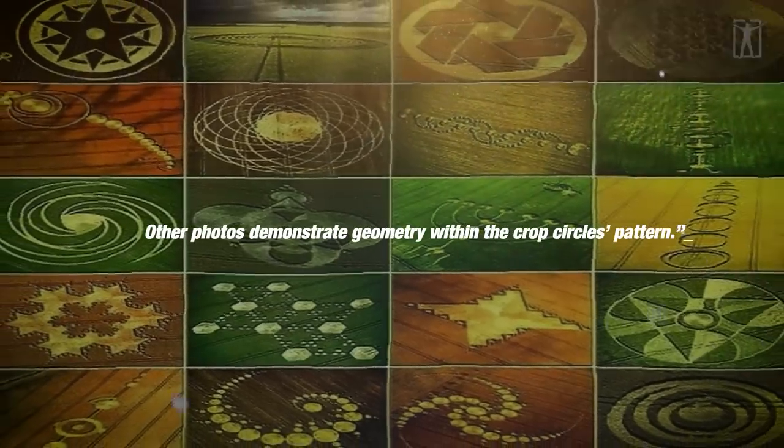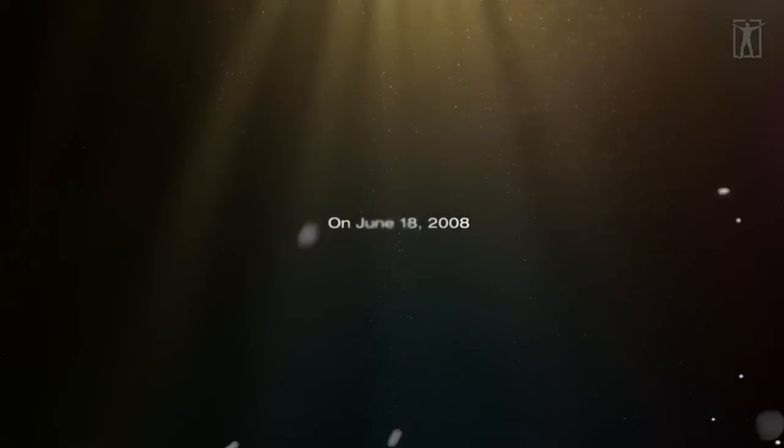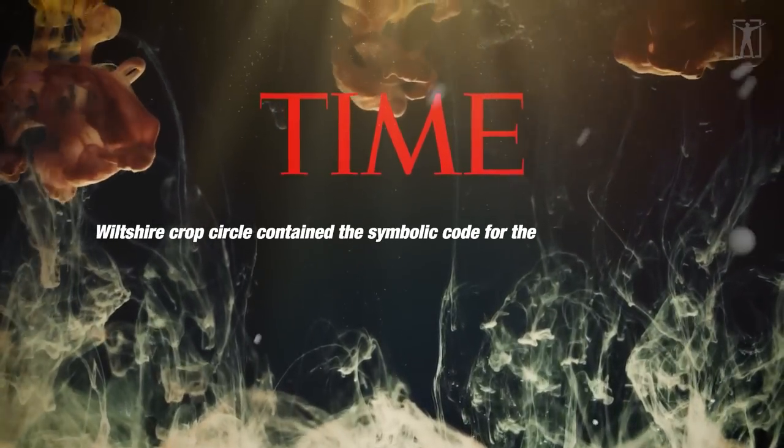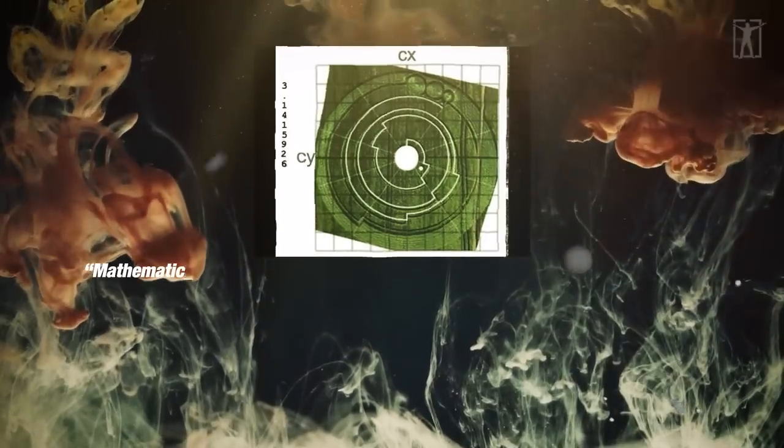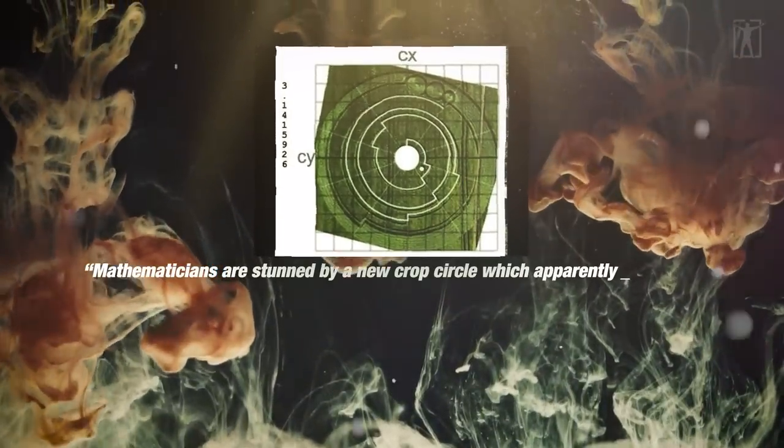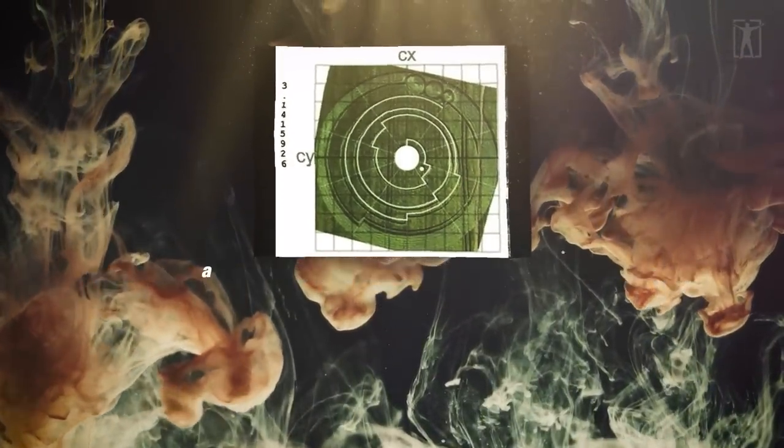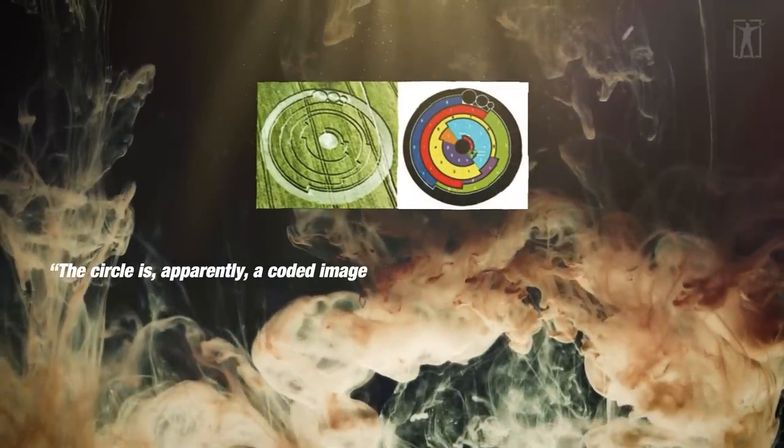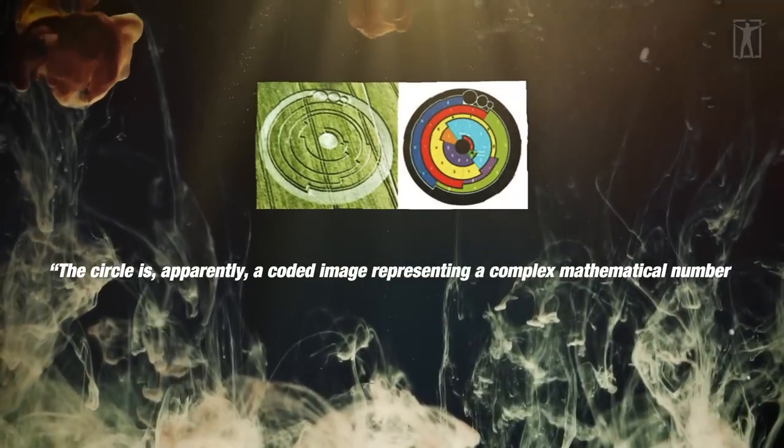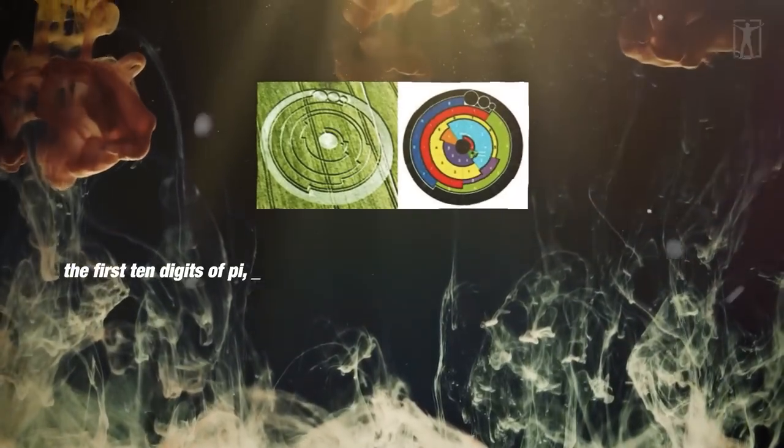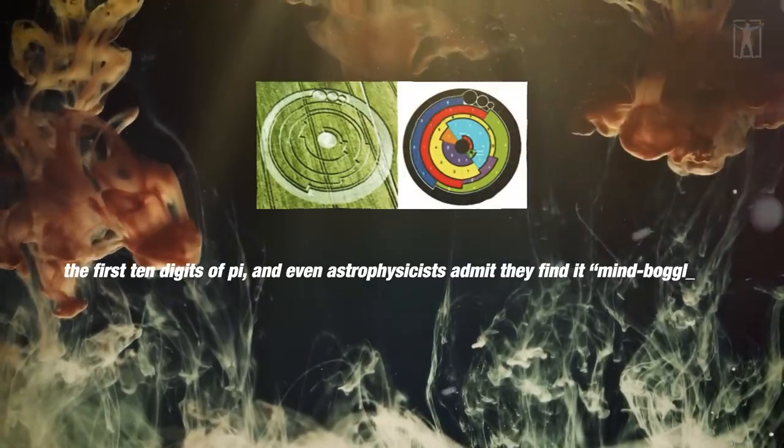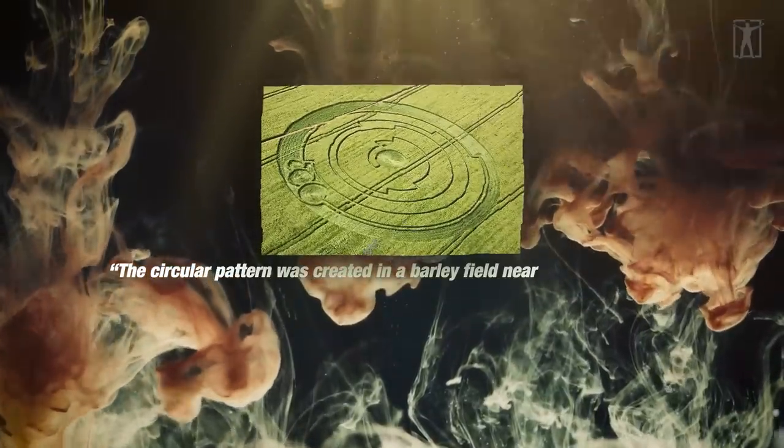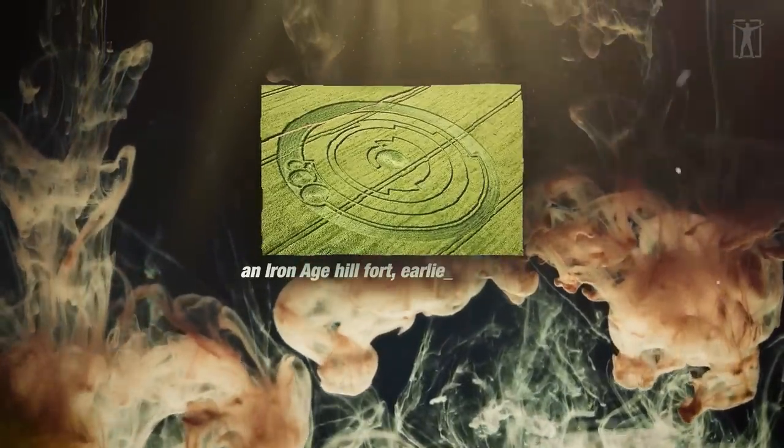On June 18, 2008, the Times reported that a Wiltshire crop circle contained the symbolic code for the first ten places of pi. Quote, Mathematicians are stunned by a new crop circle which apparently represents a perfect coded image of a complex equation. The circle is apparently a coded image representing a complex mathematical number, the first ten digits of pi, and even astrophysicists admit they find it mind-boggling. The circular pattern was created in a barley field near Barbary Castle, an Iron Age hill fort earlier this month.